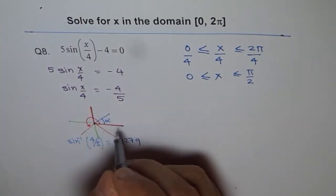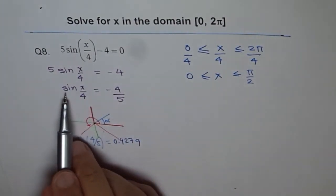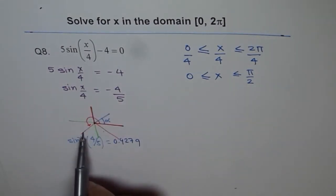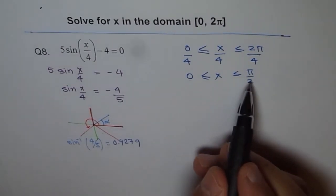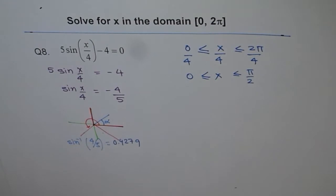But our solutions for sin being negative is only in quadrant 3 and 4. So that means in the given domain of 0 to π/2, we have no solution.